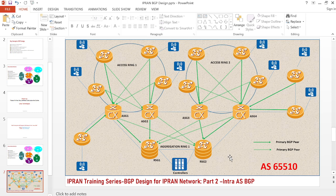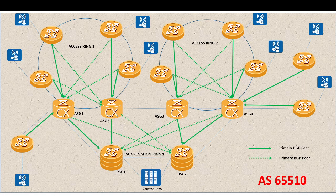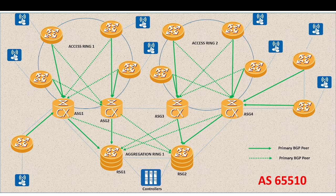Our focus today is how we do intra-AS BGP design for an IPRAN network for service providers. You can see the general IPRAN network setup: we have RSGs (RSG1, RSG2), SGs (SG1, SG2, SG3, SG4), and CSGs. We've used different topologies to illustrate connectivity — including ring topology with access ring one and access ring two. Ring topology is always preferred because of its redundant nature, which protects services.